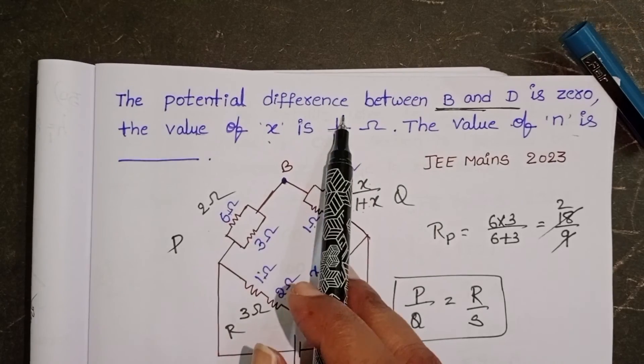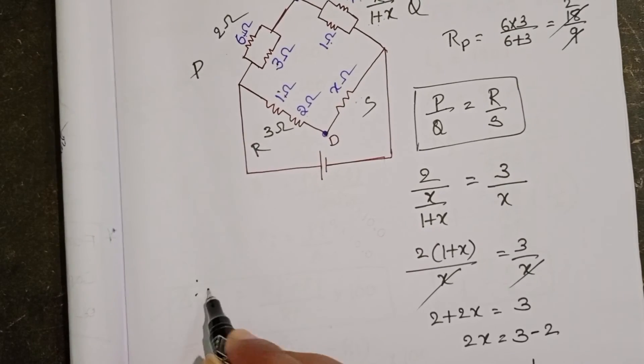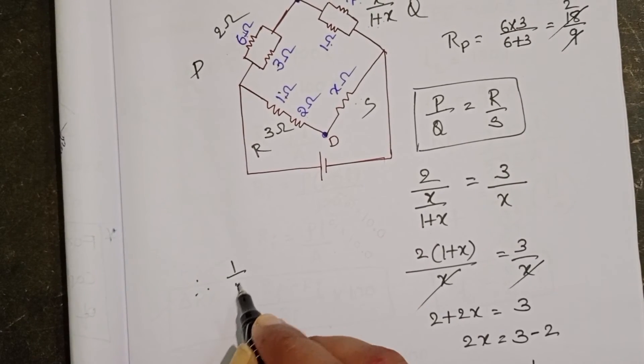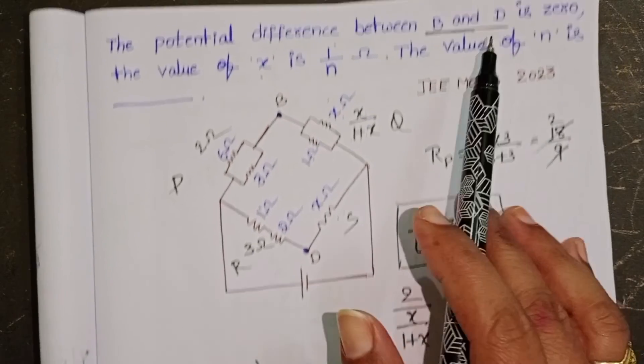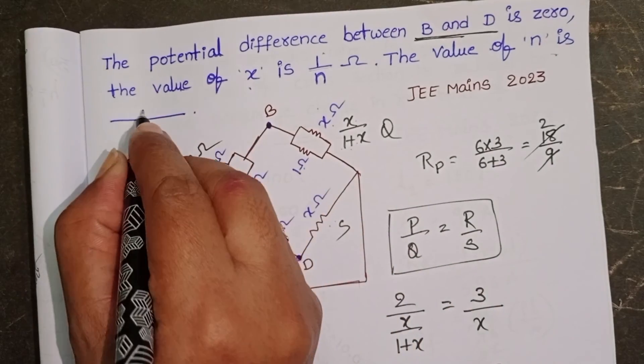Then X equals 1 by 2. Given X is 1 by N, therefore 1 by N equals 1 by 2. Then N equals 2. The value of N is 2.